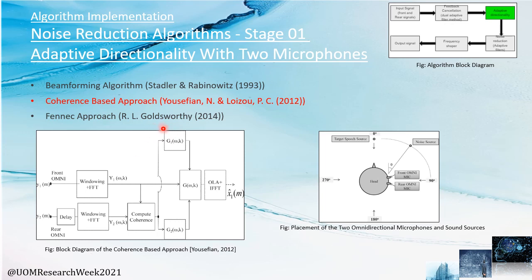Moving on to the noise reduction algorithms, we have divided this section into two stages. For stage one, we considered three algorithms which use two microphone inputs. From those three algorithms, we chose the coherence-based approach because it gave us promising results. Here is the block diagram of this coherence-based approach.